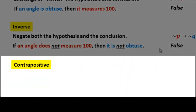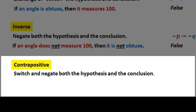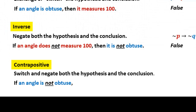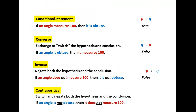The next word is contrapositive. The way I remember it is that it's the longest word and also the one you do the most to — you do both the converse and the inverse. So you switch and negate both the hypothesis and the conclusion. It would read: if an angle is not obtuse, then it does not measure 100°. In notation, we switch the letters and negate them: if not Q then not P.